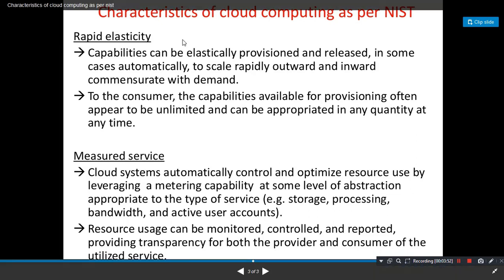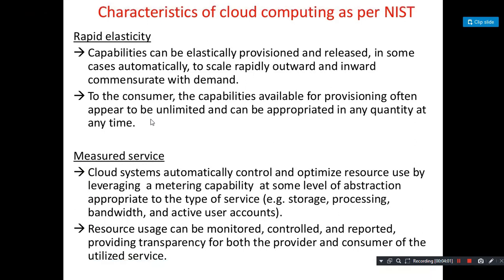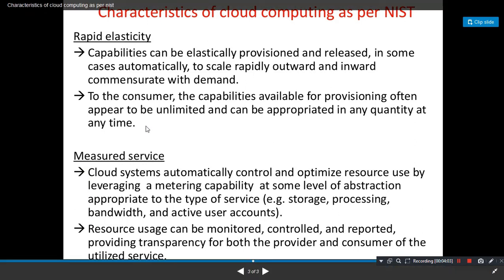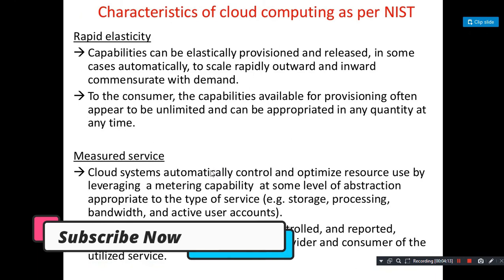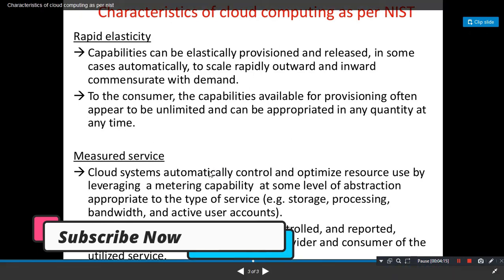Fifth and last is measured services. Like if you use 25 CPUs for 2 days, you pay for those 2 days only. Whatever you use — storage, processing, bandwidth, and active user accounts — that is all you pay for. Through a UI, you click and the backend storage and processing is all managed for you at a high level. This is measured services.